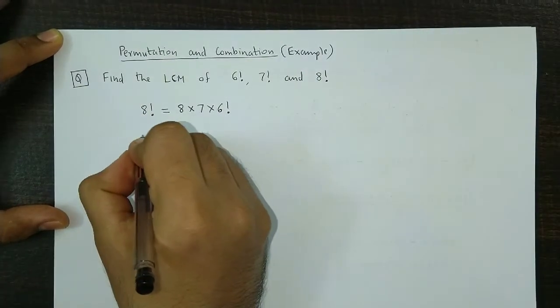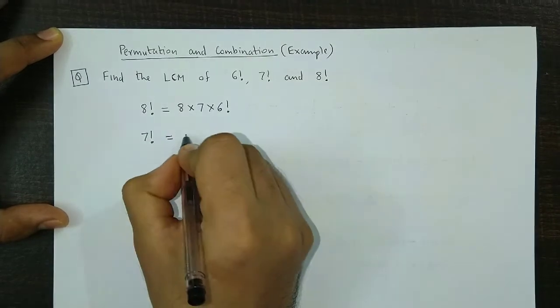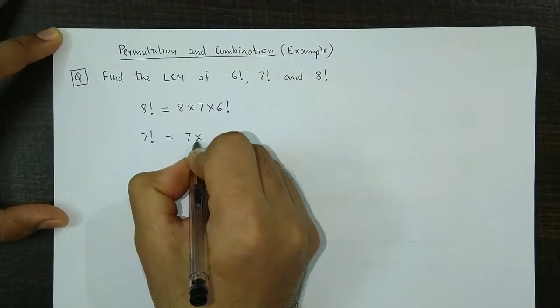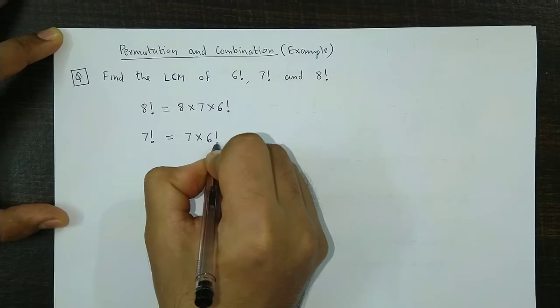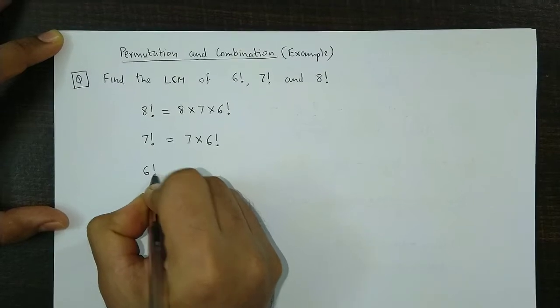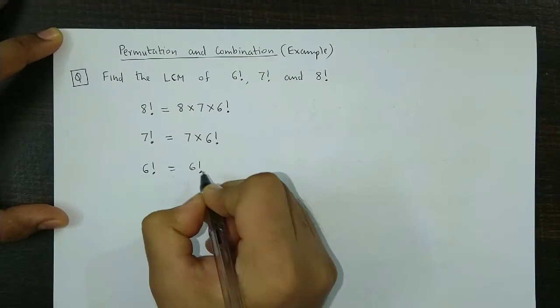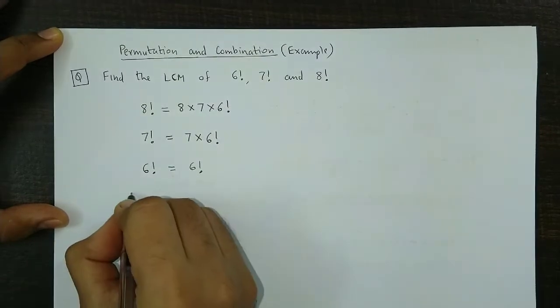Next we take 7 factorial. 7 factorial could be expressed as 7 into 6 factorial, and lastly we have 6 factorial. We just keep it as it is and now we take the LCM easily.